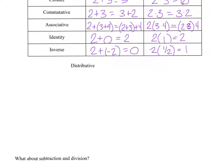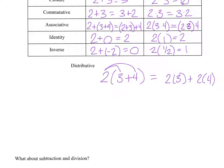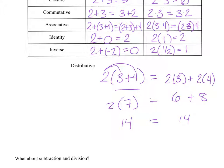Then there's the distributive property. The distributive property says if you have a multiplication on the outside and addition on the inside, you can multiply both of those separately. So 2 times (3 + 4) becomes 2 times 3 plus 2 times 4. You could just add first to get 14, or if you multiply them separately you would still get 14. It doesn't matter which way you use it — you get the same answer. This is useful because we're going to have to distribute quite a bit in this class.